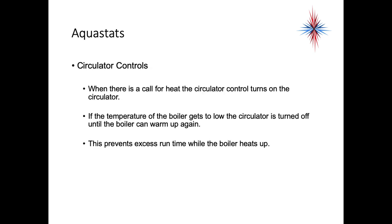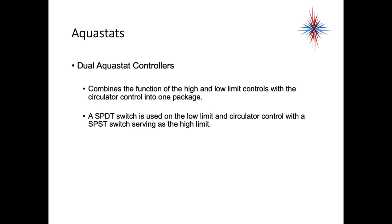When there's a call for heat, the circulator control turns on the circulator. If the temperature of the boiler gets too low, the circulator is turned off until the boiler can warm up again. This prevents excess run time while the boiler heats up.